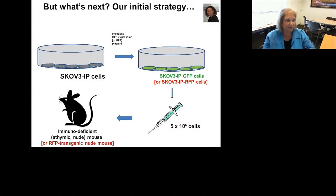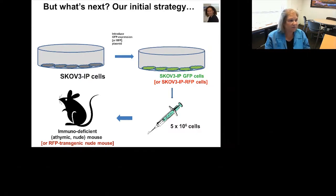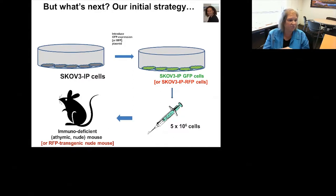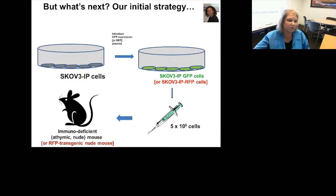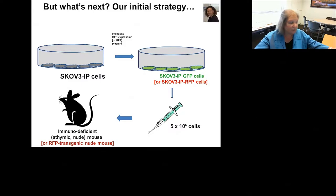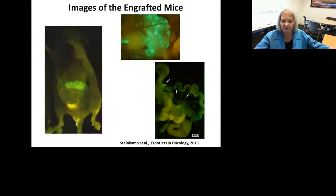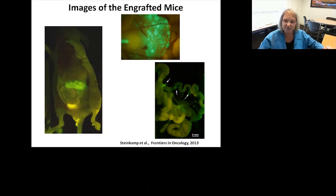Our strategy was to observe this process. We prepared ovarian cancer cells, using mostly an SKB03 intraperitoneal injection model. We make those cells red or green fluorescent by expressing cytoplasmic versions of fluorescent protein, then inject around five million cells or so into an immunodeficient athymic nude mouse. The next image shows what the mice look like about three weeks after engraftment — the disease progresses quite rapidly.